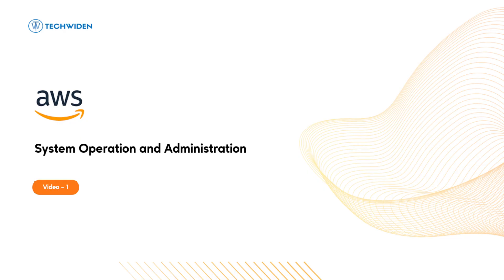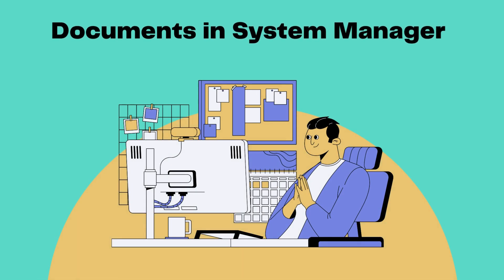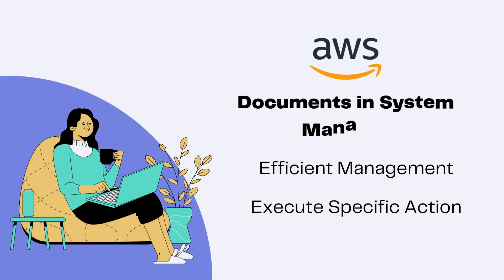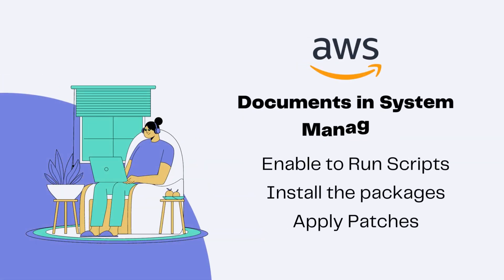Hello everyone, welcome back to Tech Wider. Today we are going to explore one of the powerful features of System Manager called Documents, and how to run commands on our EC2 instances with the help of documents. Documents are predefined scripts that specify the steps needed to perform various tasks on our EC2 instances, allowing us to automate complex actions and configurations, making management more efficient. Commands are designed to execute specific actions on EC2 instances — running scripts, installing software or packages, and applying patches.